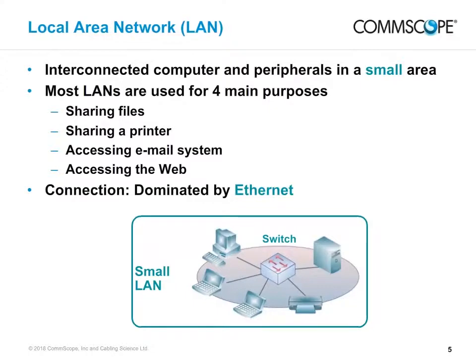As computers spread into departments and PCs reached individual desks, a new kind of network was needed — one that only had to serve a small area and didn't need the same kind of front-end processors and cluster controllers as a mainframe. To meet this need, the LAN was developed. Today, the most widely used LAN technology is Ethernet, which strikes a good balance between speed, price, ease of installation, and low support costs. The most common applications on LANs are file sharing, email, printer sharing, and web access. In the near future, we can expect real-time collaborative working and video applications to contribute a much higher proportion of LAN traffic.